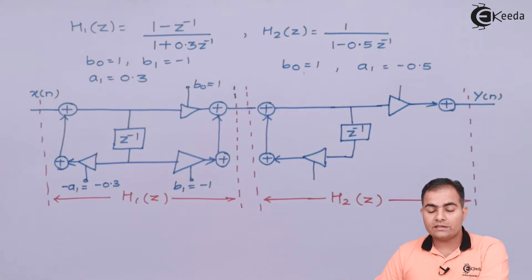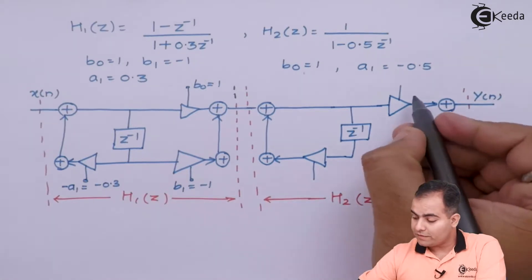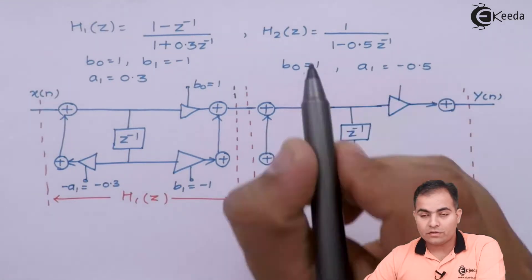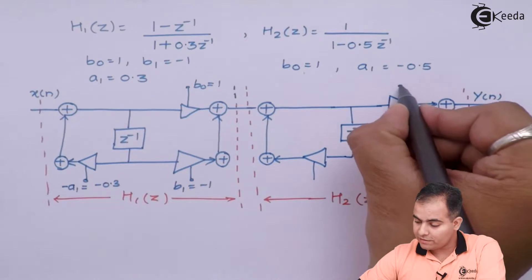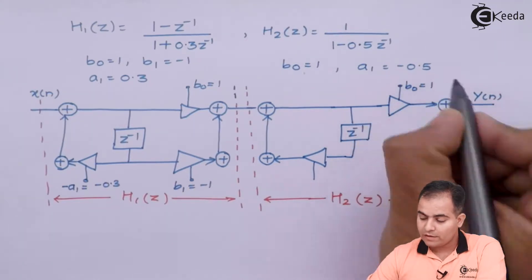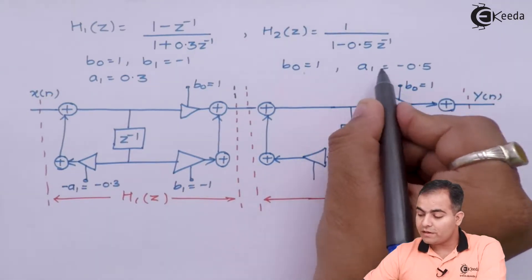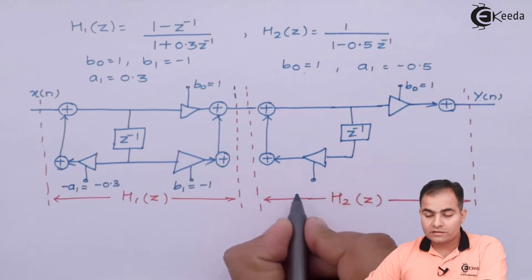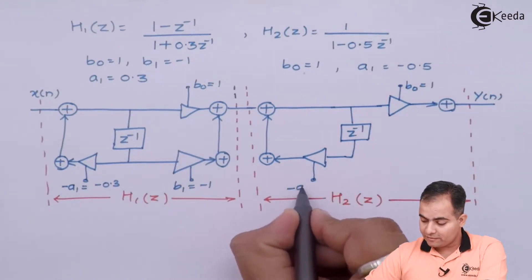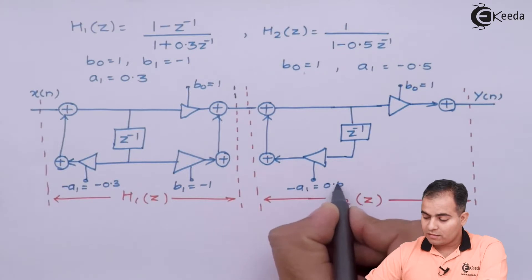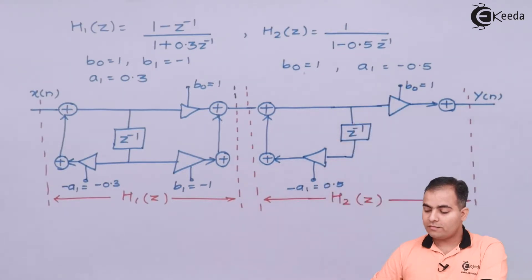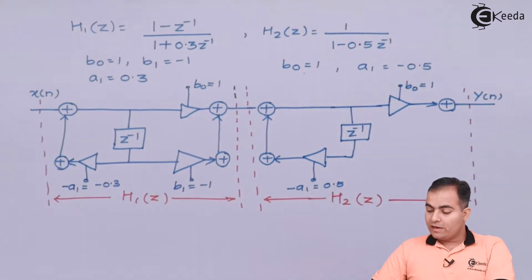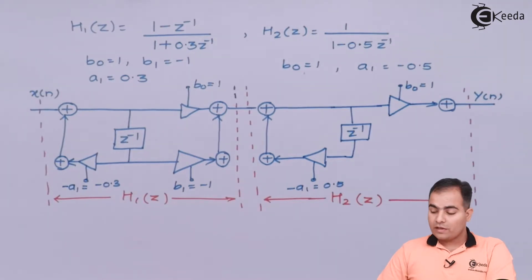For H2(z), draw the DF2 structure: B0 = 1, and A1 = -0.5 so after applying the minus sign the coefficient becomes +0.5. This completes the cascade form of the given structure. Now we move on to the parallel form.